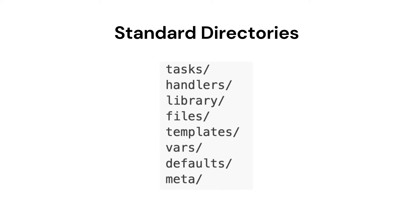There are 8 standard directories that we can use: tasks, handlers, library, files, templates, vars, defaults and meta. It is not mandatory to have all the directories in the role, but we should have at least one directory present in the role.